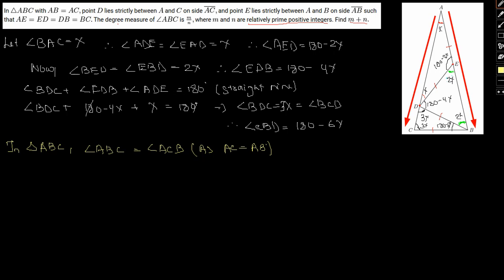So therefore what is angle ABC? Angle ABC will be 180 minus 6X plus 2X equal to 3X. So if we solve this equation we get 4X equal to 3X equal to 180 by 7.